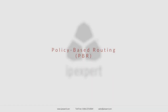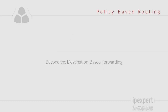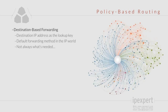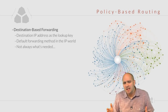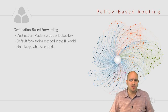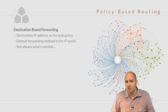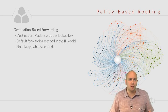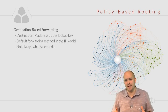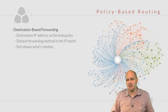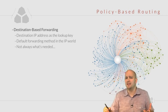We are now going to talk about policy-based routing, or PBR as it is sometimes called. PBR is the way in IOS in which we can go beyond the default destination-based forwarding. In the IP world, the primary lookup key for forwarding traffic is the destination IP address on the packet being forwarded. In some cases, this is not exactly what we want to do — we want to perform a different kind of forwarding.